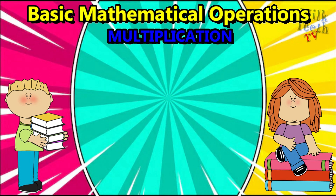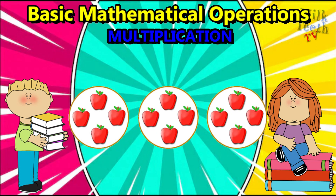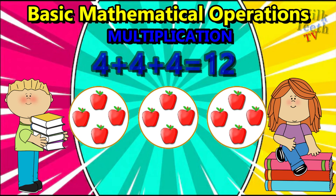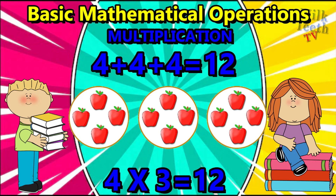So we have three plates of four apples each: four plus four plus four — in all we will have twelve apples. This can be written as four apples multiplied by three plates, which equals twelve. Four times three equals twelve.